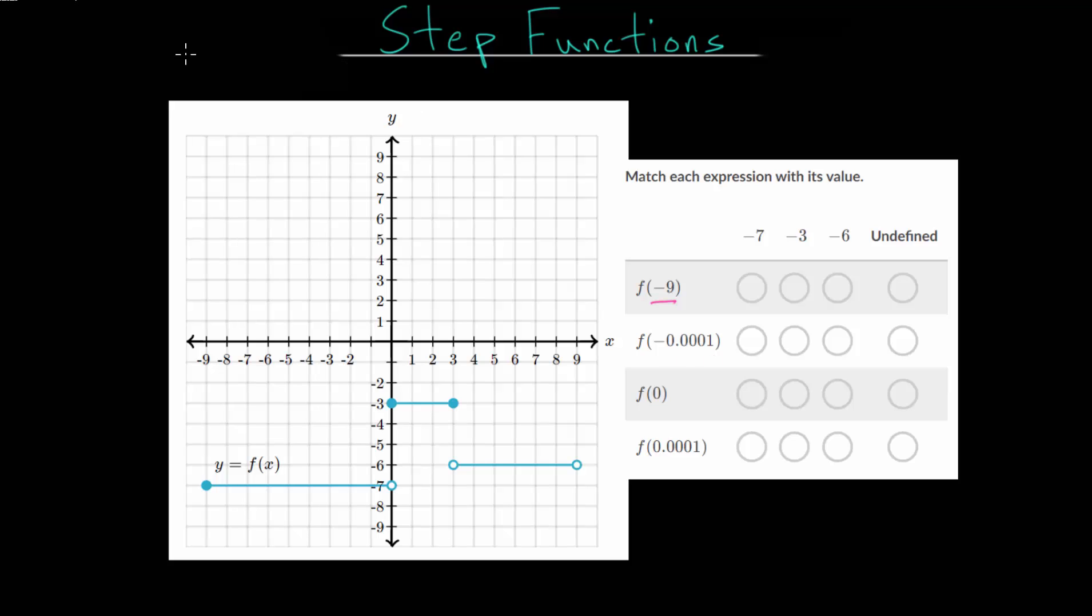So for f of negative 9 we'll just find that x value and go to the blue curve on the graph and notice it's a filled in circle. So that means it is going to be this particular y value which looks to be negative 7.